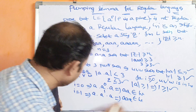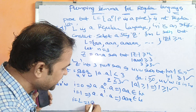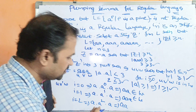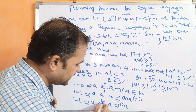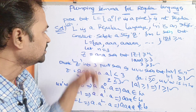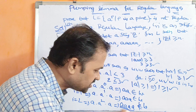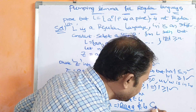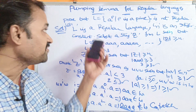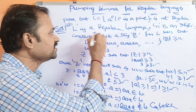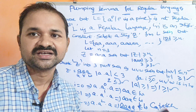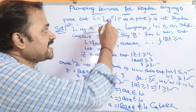3 As is also present in the language. Let I equal 2: U · V^2 · W = A · AA · A = 4 As. But 4 As is not present in the language — 4 is not a prime number. So this is a contradiction. Initially we assumed L as regular, but the string 4 As is not present in the language. So this is a contradiction.